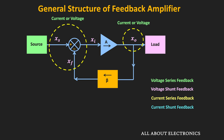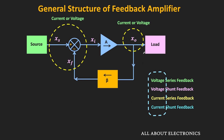The four feedback topologies are: voltage series, voltage shunt, current series, and current shunt. In all four topologies, the first term shows the parameter sampled at the output side, and the second term shows the type of connection of the feedback network with the input side. Different textbooks use different naming for these four topologies, and we will also see the alternate naming during our discussion.